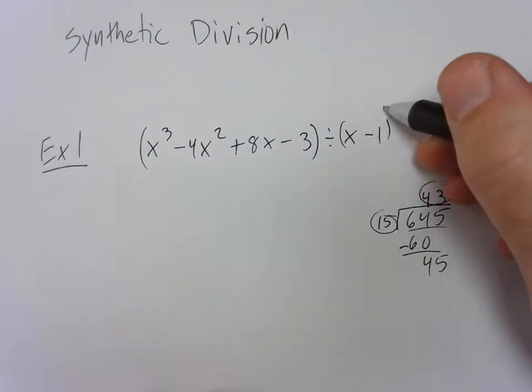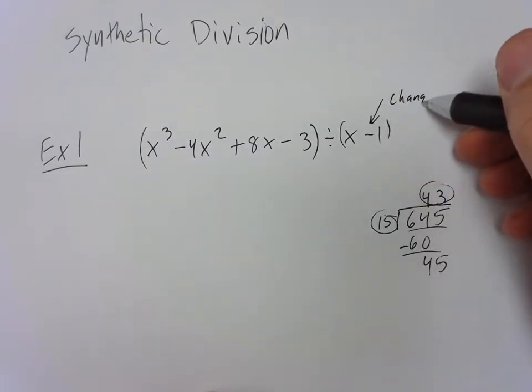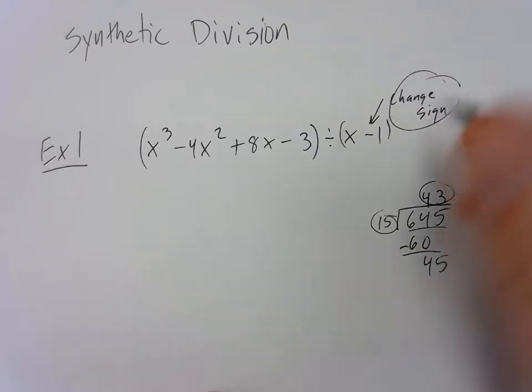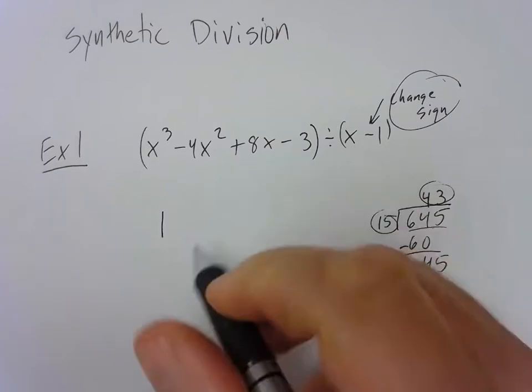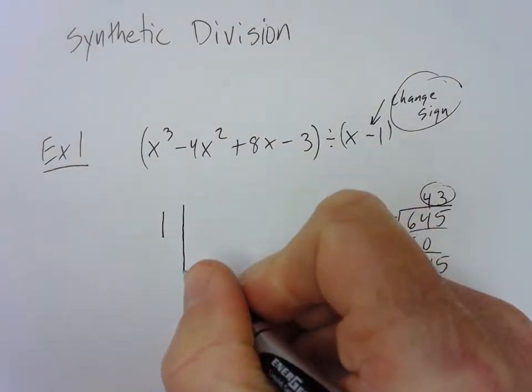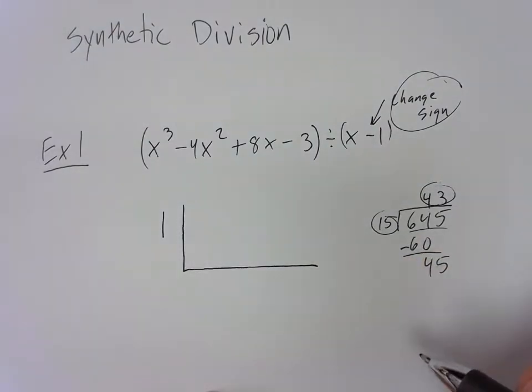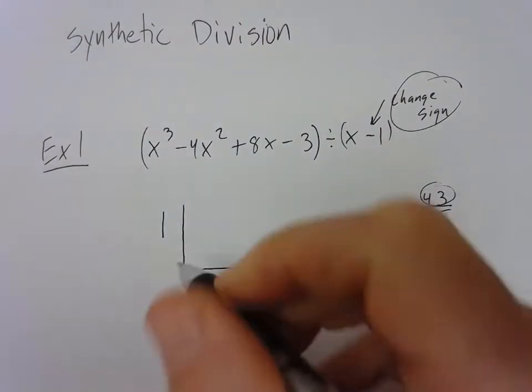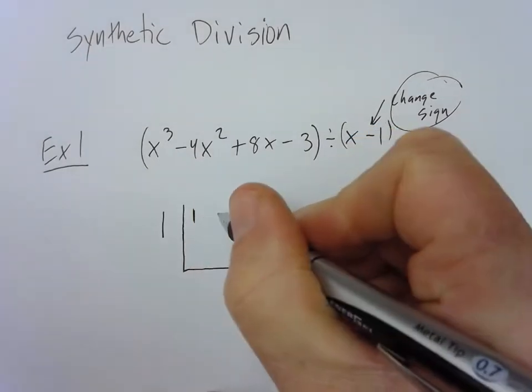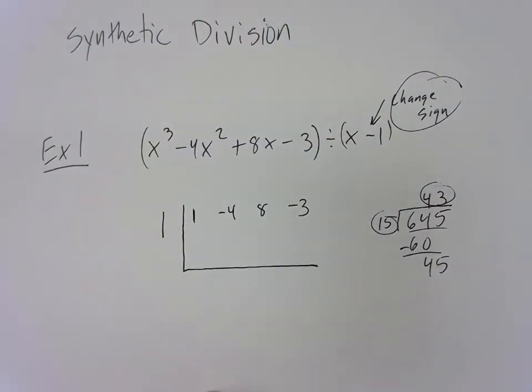So this is the first thing we do is we change this sign. If it's positive we make it negative. If it's negative we make it positive. So I'm going to write down 1 instead of negative 1. Synthetic division turns the whole division world upside down. So instead of making a regular bracket, I'm going to make an upside down one. So we got 1, negative 4, 8, and negative 3.